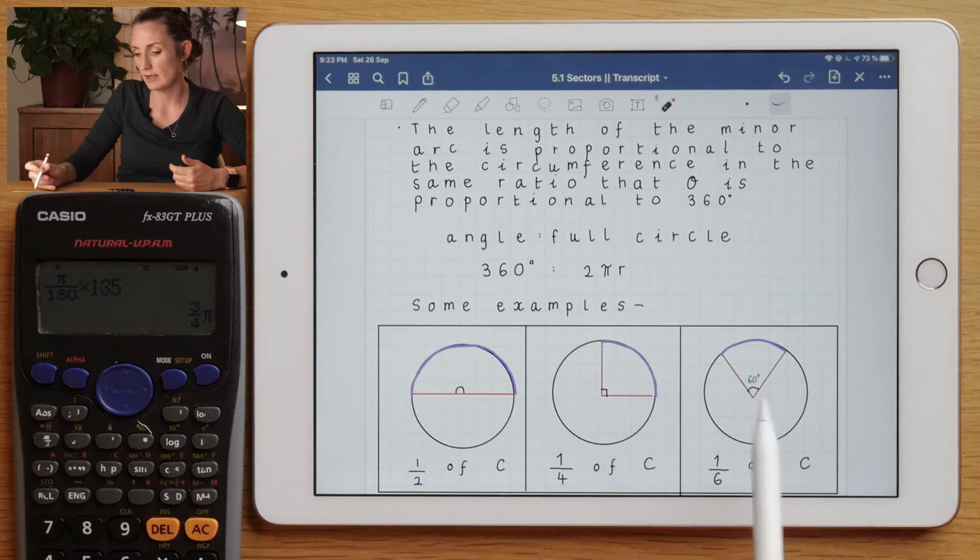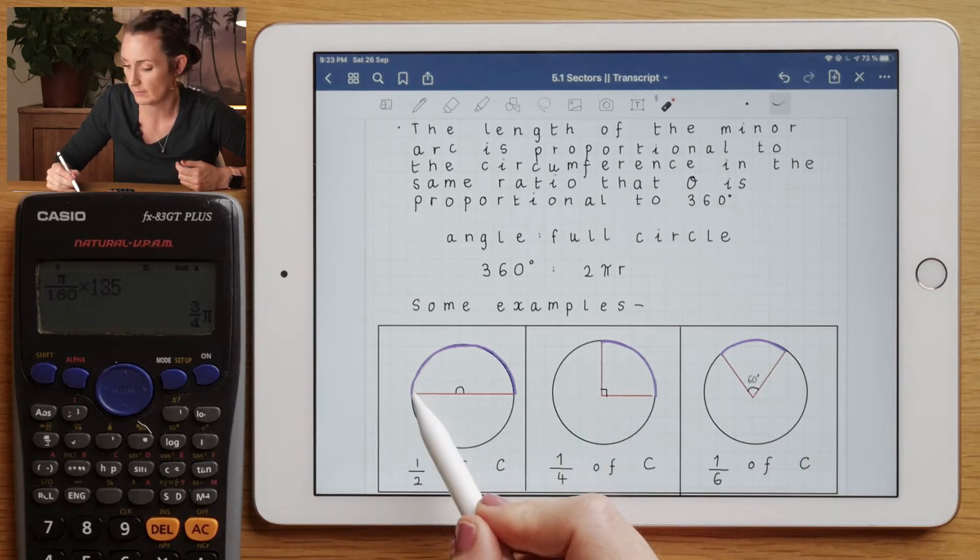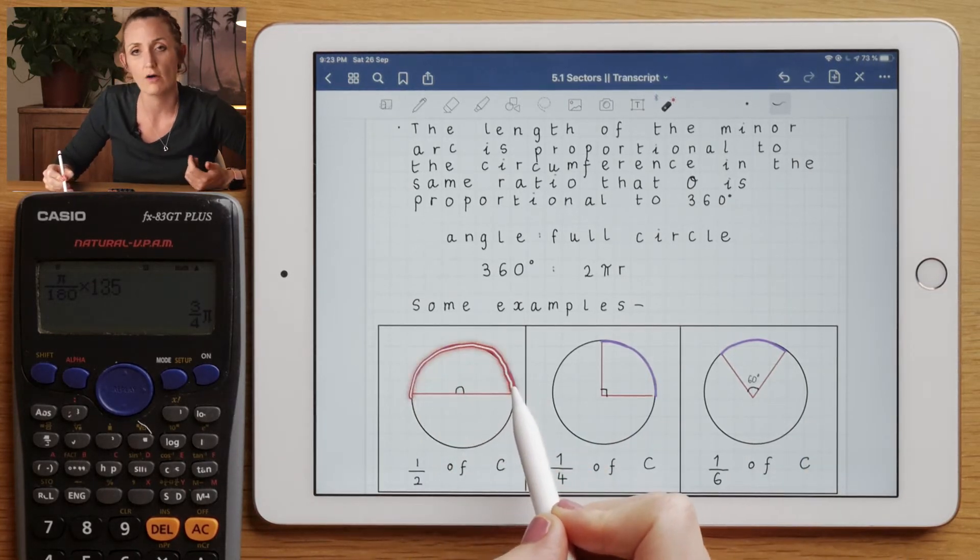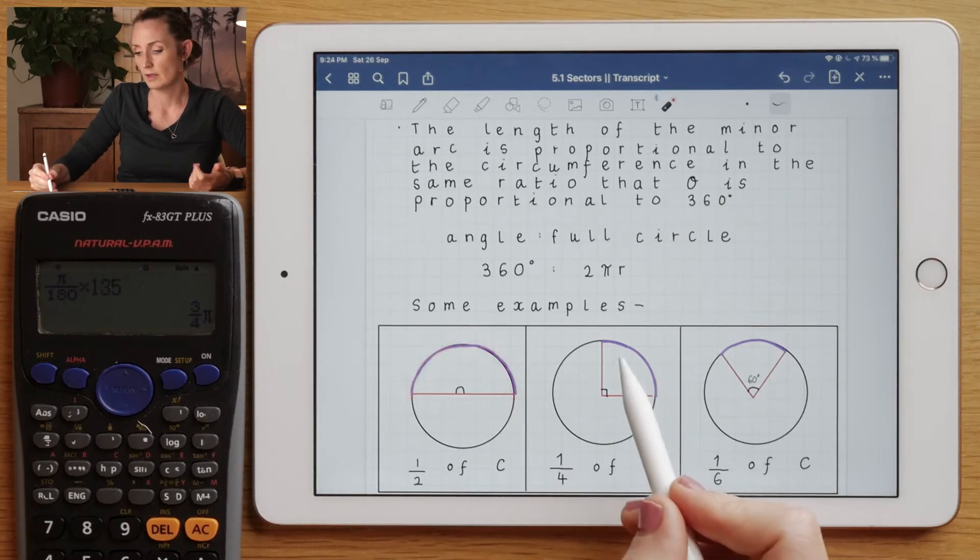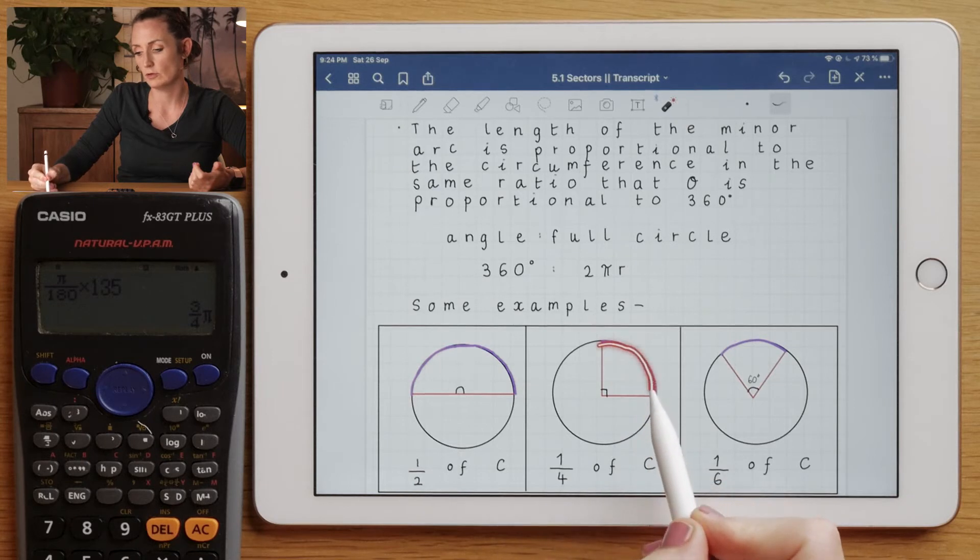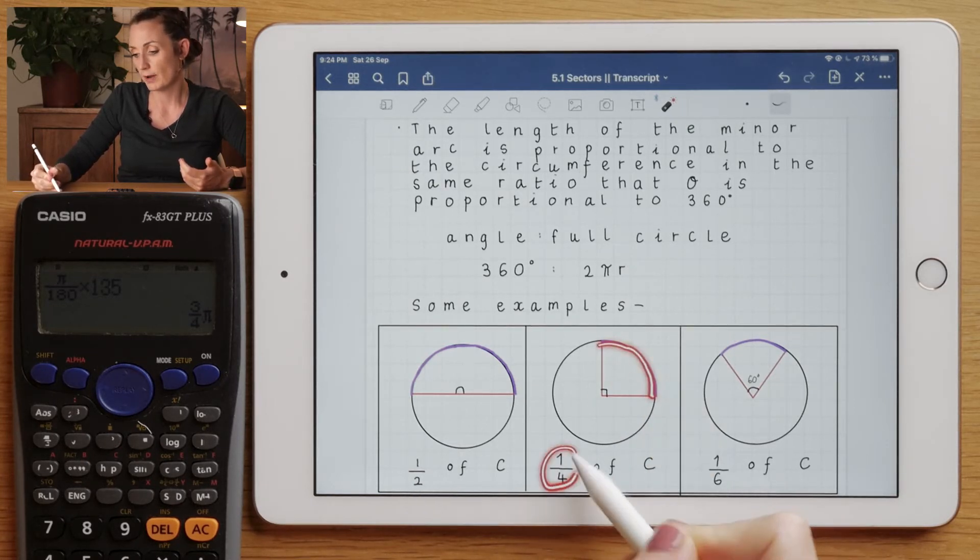Here are some examples, and you can think about what the arc length would be. Here you can see that's half a circle, so you would just take your answer for circumference and divide it by 2. Here we've got a quarter circle, so you would take your answer for circumference and divide by 4 or multiply by a quarter.